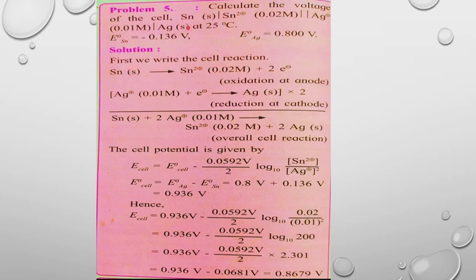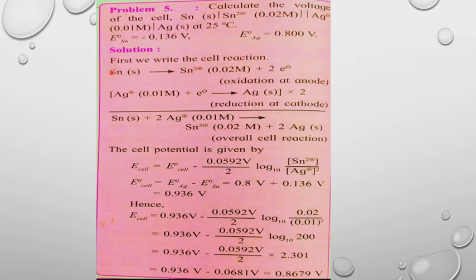Setting up the half-reactions: at the anode (oxidation): Sn → Sn²⁺ + 2e⁻. The oxidation number increases from 0 to 2+, confirming this is the oxidation reaction at the anode — electrons are lost.